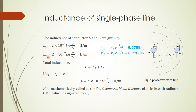Similarly, conductor b gives an inductance Lb = 2×10⁻⁷ × ln(d/r'₂), where r'₂ is the equivalent radius of conductor b. The total inductance of a single-phase line is L = La + Lb. When r₁ = r₂ = r, this simplifies to L = 4×10⁻⁷ × ln(d/r') H/m. Here r' is called the self geometric mean distance, or GMR, designated as Ds, where s stands for self.